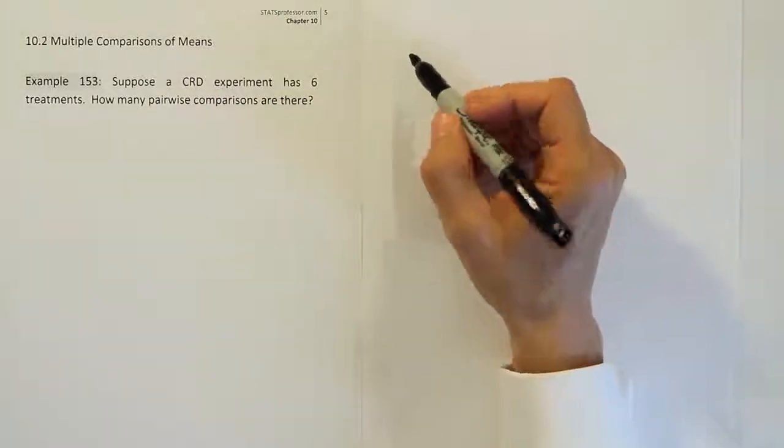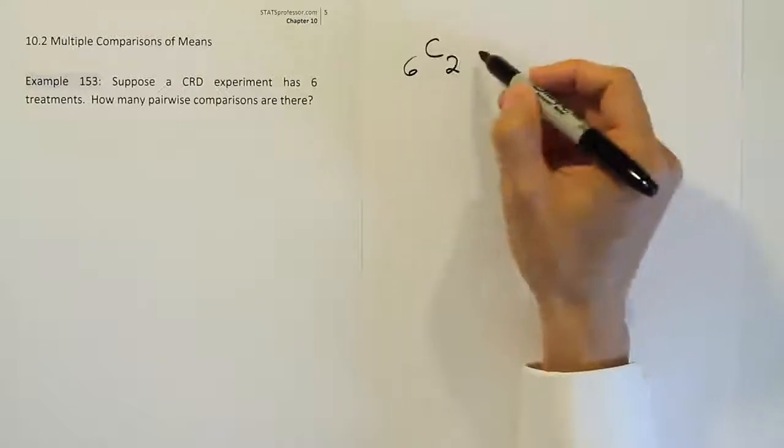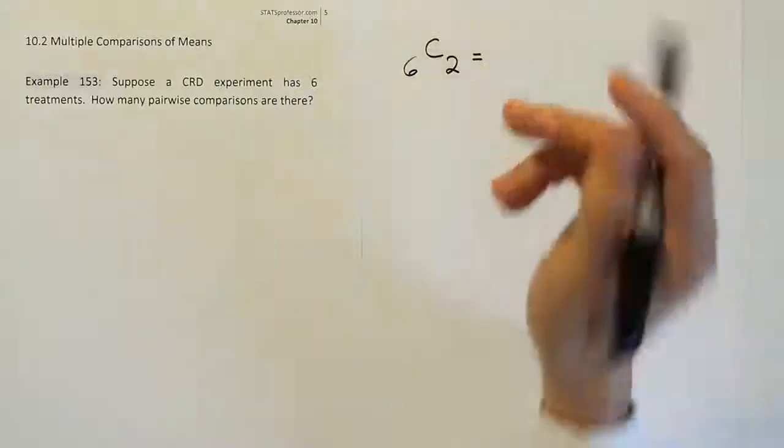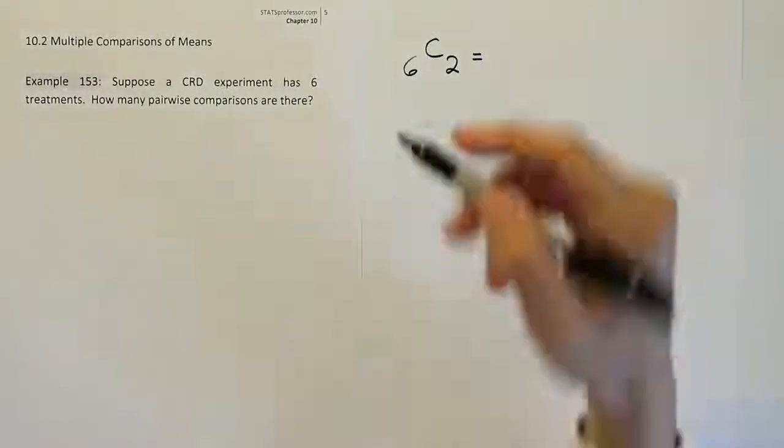So basically the formula is going to be six choose two and that would be something you would have learned in stats one but you may say well I don't remember that combinations formula. Well don't worry we can reduce this to something simpler in a moment here and I'll give you a more generic formula.